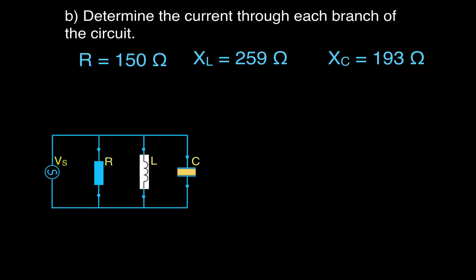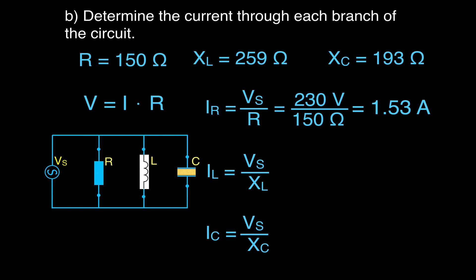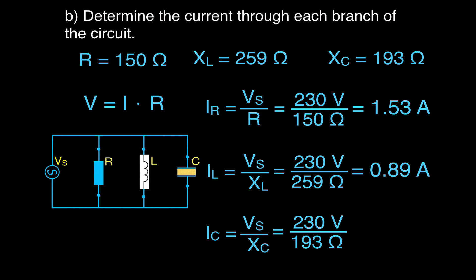Now we'll get the current through each branch: the resistor, the inductive branch, and the capacitive branch. Using Ohm's law, the current through the resistor is V divided by R, the inductive branch current is V divided by XL, and the capacitive branch current is V divided by XC. The voltage across each branch in a parallel circuit is equal to the source. So: IR = 1.53 A, IL = 0.89 A, and IC = 1.19 A.